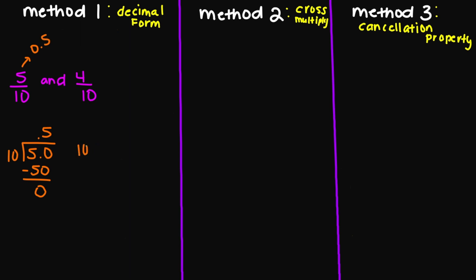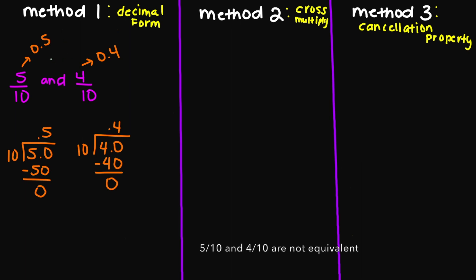Now let's look at my 4 over 10. My 10 is on the outside, 4 on the inside. So I'm going to add my decimal and zero. 10 does go into 40 four times. 10 times 4 is going to equal 40. 40 minus 40 is going to equal 0. So your decimal form here is going to be 0.4. And looking at these two examples, we can see that these two fractions are not equivalent because I have 0.5 here and I have 0.4 here. So they are not the same number.